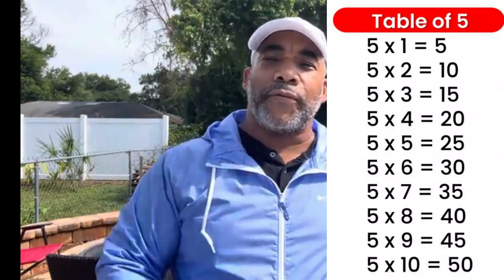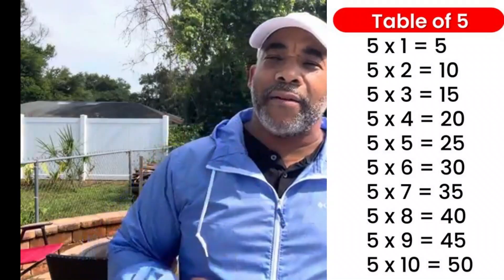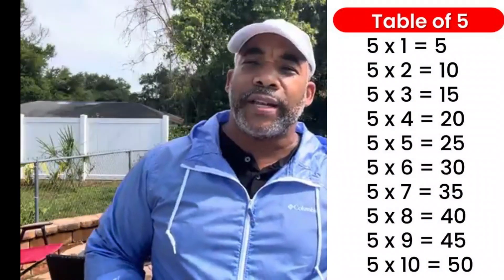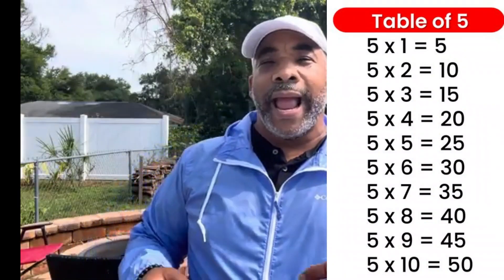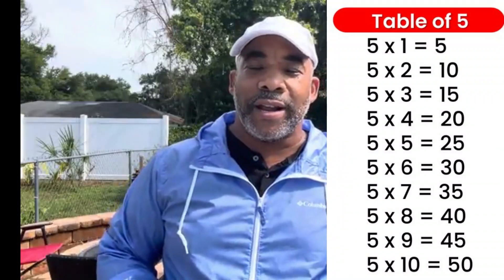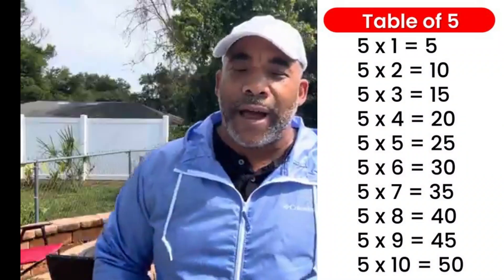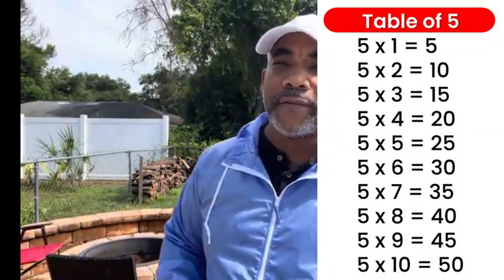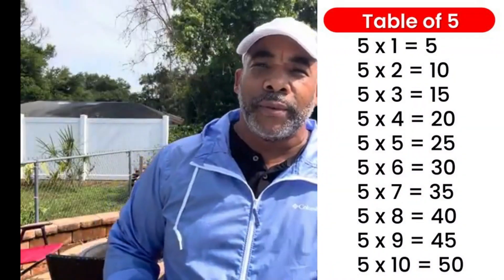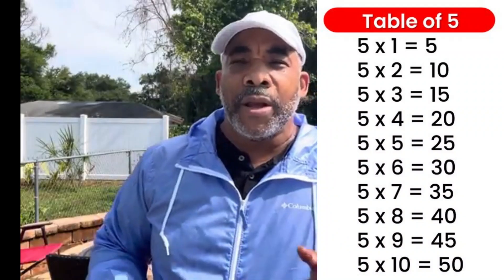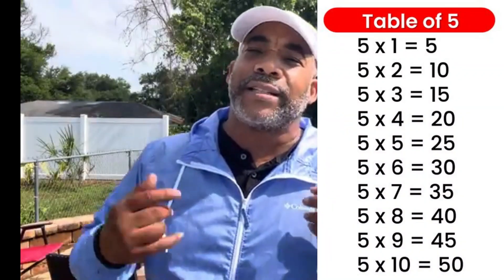1 times 5 is 5, 2 times 5 is 10, 3 times 5 is 15, and 4 times 5 is 20. 5 times 5 is 25, 6 times 5 is 30, 7 times 5 is 35, 8 times 5 is 40, 9 times 5 is 45, 10 times 5 is 50, 11 times 5 is 55, 12 times 5 is 60.